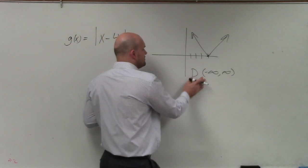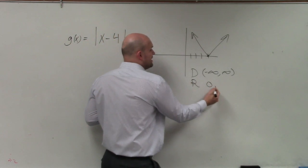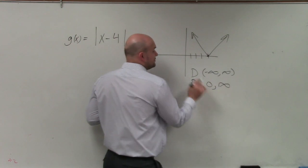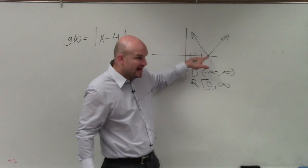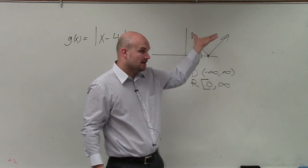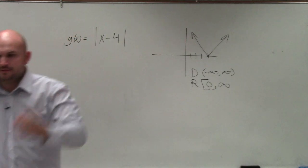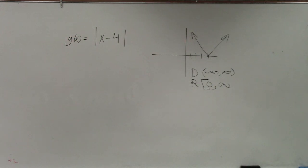is going to be how low the graph goes to how high it goes. How low does this graph go? Zero. And how high does it go? Infinity. You can see that zero is included, so we use a bracket. Zero is a value on the graph, so it's zero up to infinity.